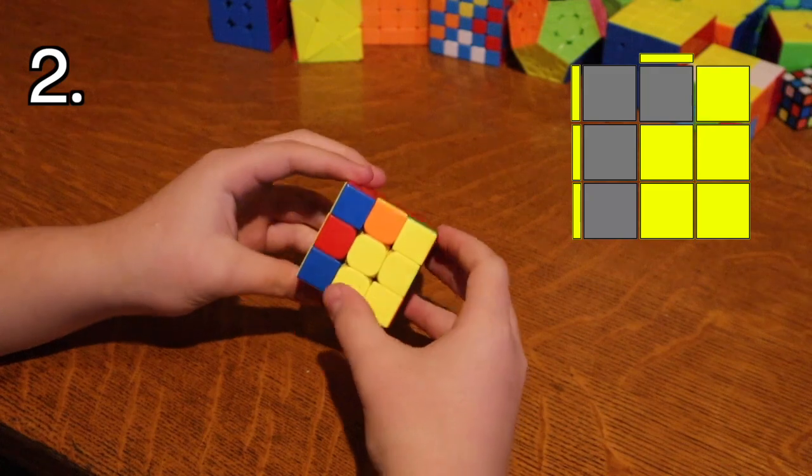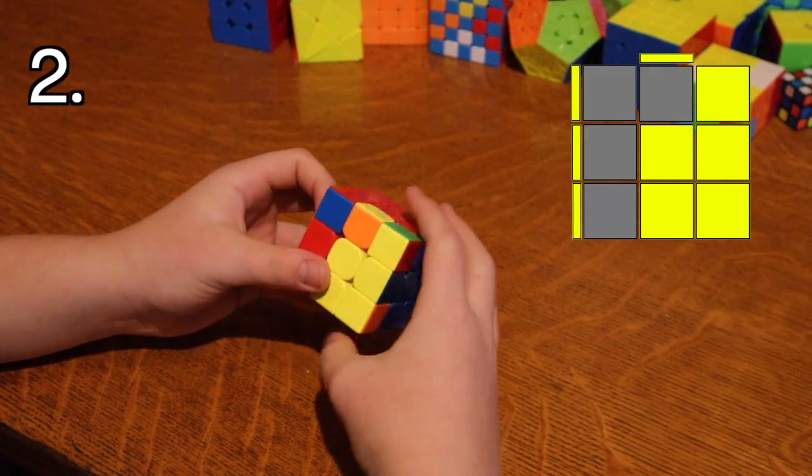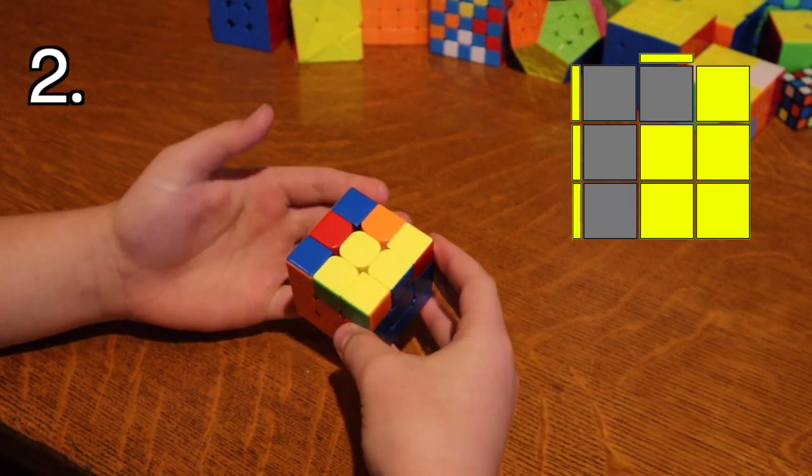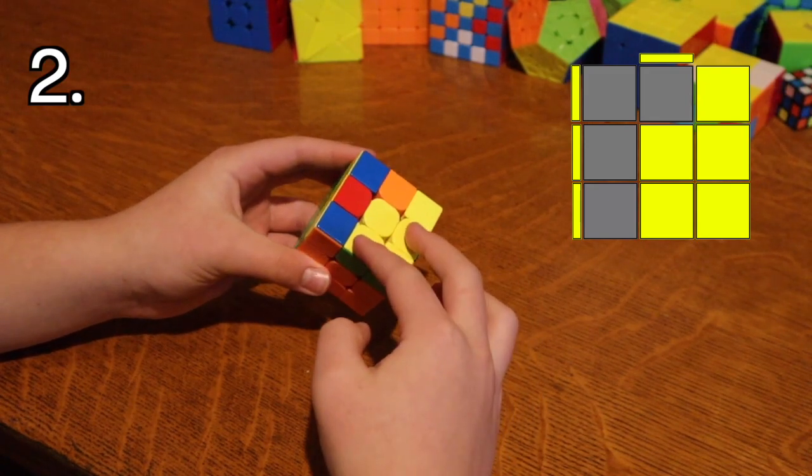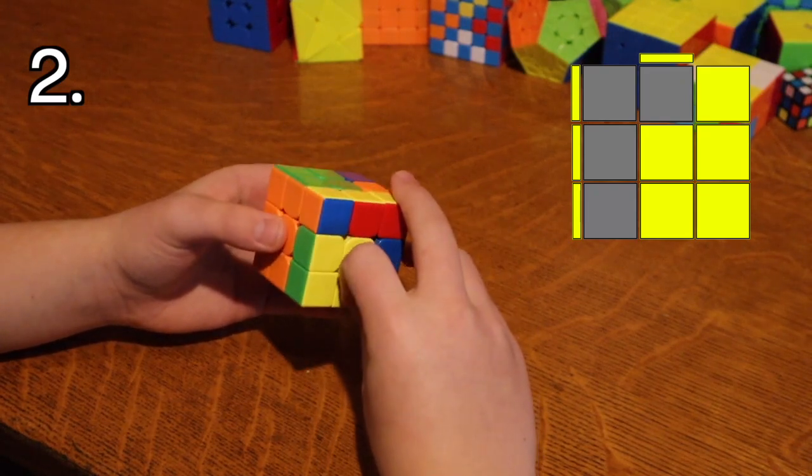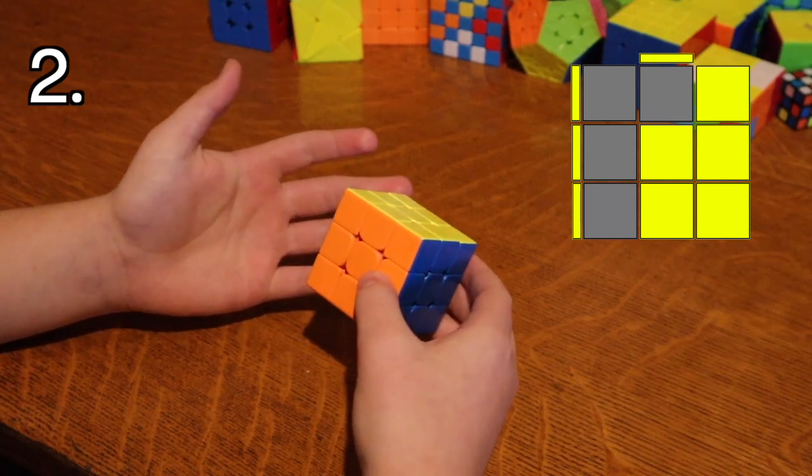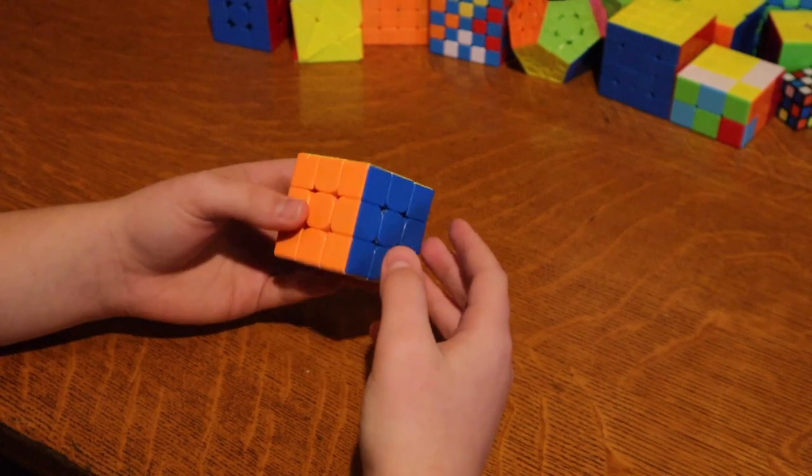Next, we're going to do this case. It kind of looks like a B and this edge up here is pointing up and these three are all pointing to that side. And once again, if you know two look OLL, then you'll know this one. What you do to solve this case is you do the same thing you would do to solve any case where these two edges are pointing up. So F wide R U R prime U prime and F wide prime. So if you already use that algorithm to solve the corner case for two look OLL, then you should know that.